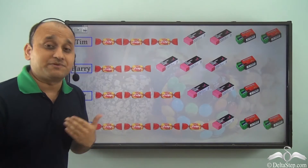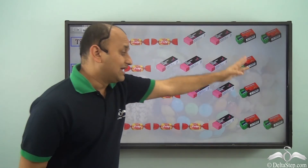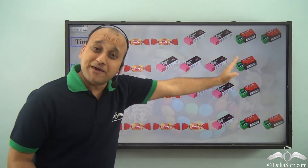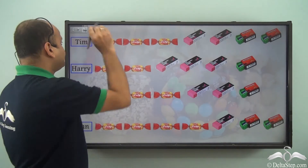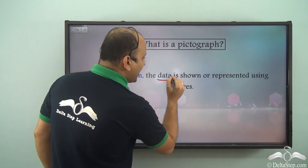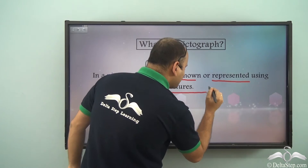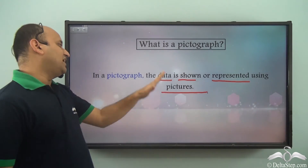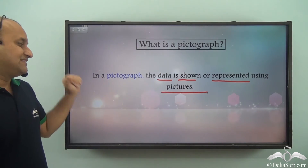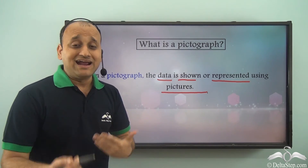This type of data representation is called a pictograph. What you see here is a pictograph because it is made up of pictures rather than numbers or text. In a pictograph, the data is shown or represented using pictures — that is the unique thing about it.